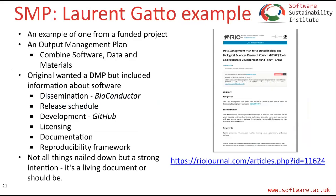Laurent took the bold step of publishing one of his output management plans in the Research Ideas and Outcomes Journal. It was from a funded project — even though they asked for a data management plan, he combined software, data, and materials. He discussed dissemination, his focus on R for genomics analysis using Bioconductor, the release schedule, development platforms on GitHub, licensing, documentation, and a reproducibility framework. Not all things were nailed down — it wasn't perfect — but remember, it's an intention around how you will go about doing things, and it should be a living document.